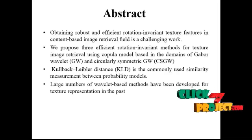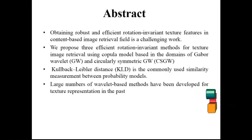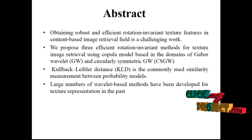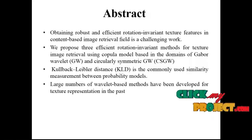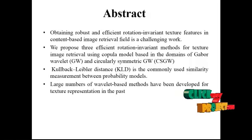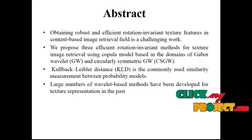Now let's see about our project abstract. Obtaining robust and efficient rotation invariant texture features in content-based image retrieval is challenging work. We propose three efficient rotation invariant methods for texture image retrieval using copula models based in the domains of Gabor wavelets and circularly symmetric Gabor wavelets. Kullback-Leibler distance is the commonly used similarity measurement between probability models. Large numbers of wavelet-based methods have been developed for texture representation in the past.